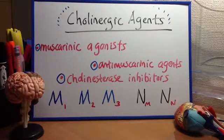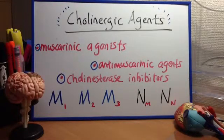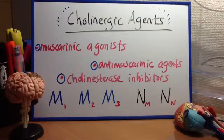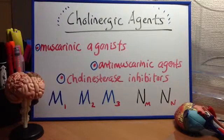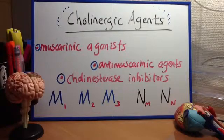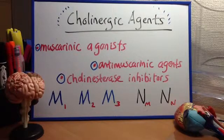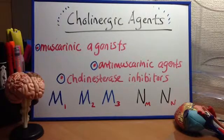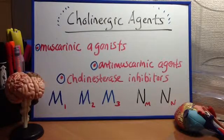M3: PLC-activated, which leads to increased IP3, which leads to DAG and increased intracellular calcium. This location is the smooth muscle tract of the GI, which increases gut peristalsis and exocrine secretions. Also the smooth muscle of the GU tract, which increases bladder contraction and relaxes the bladder sphincter, working on acetylcholine.